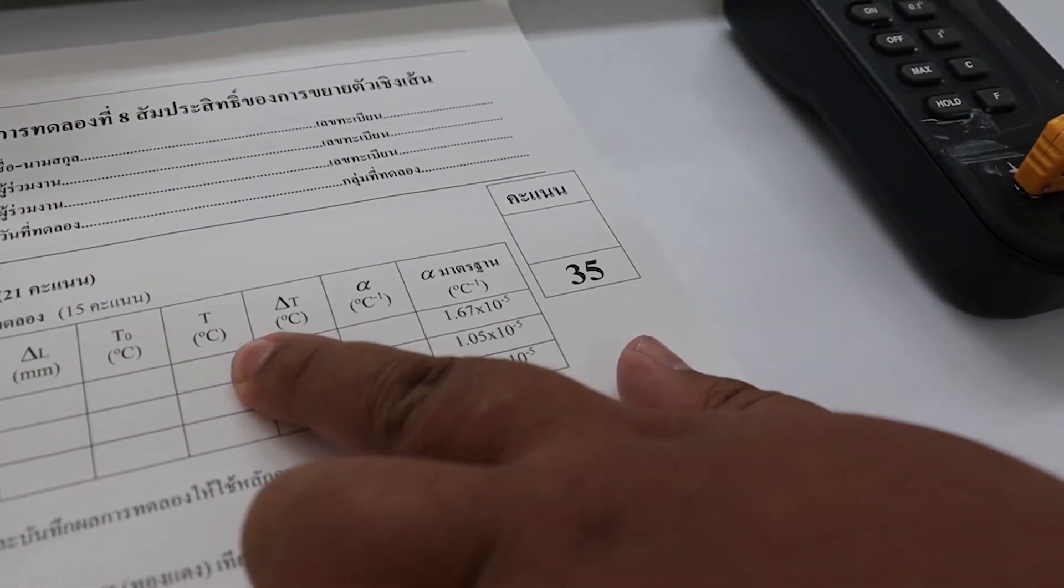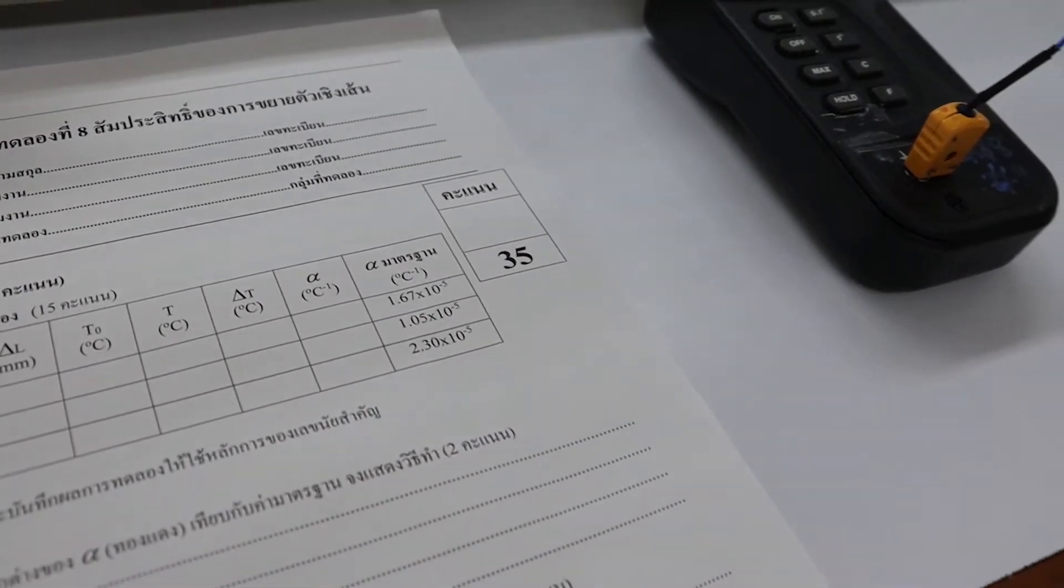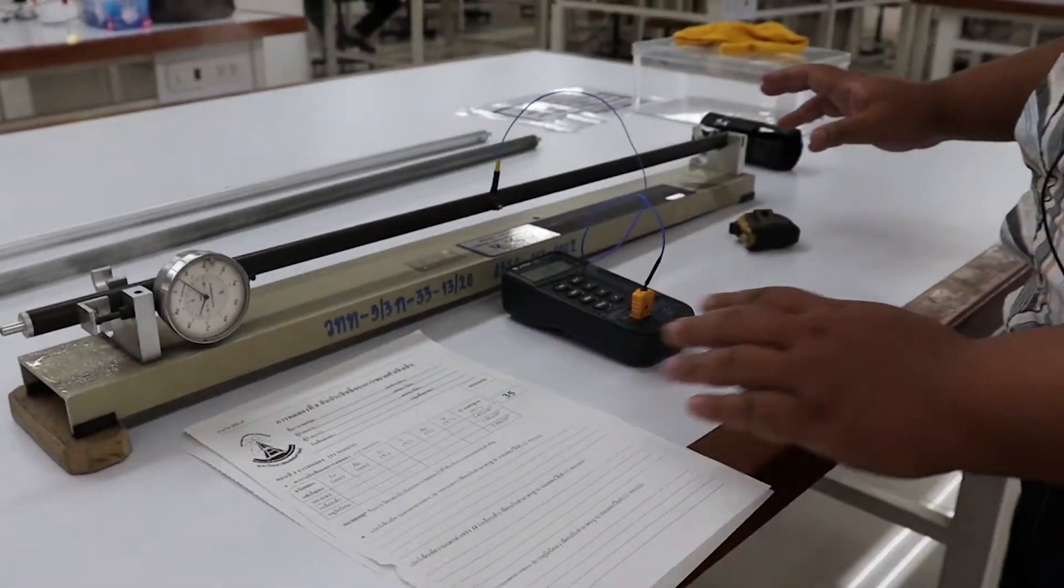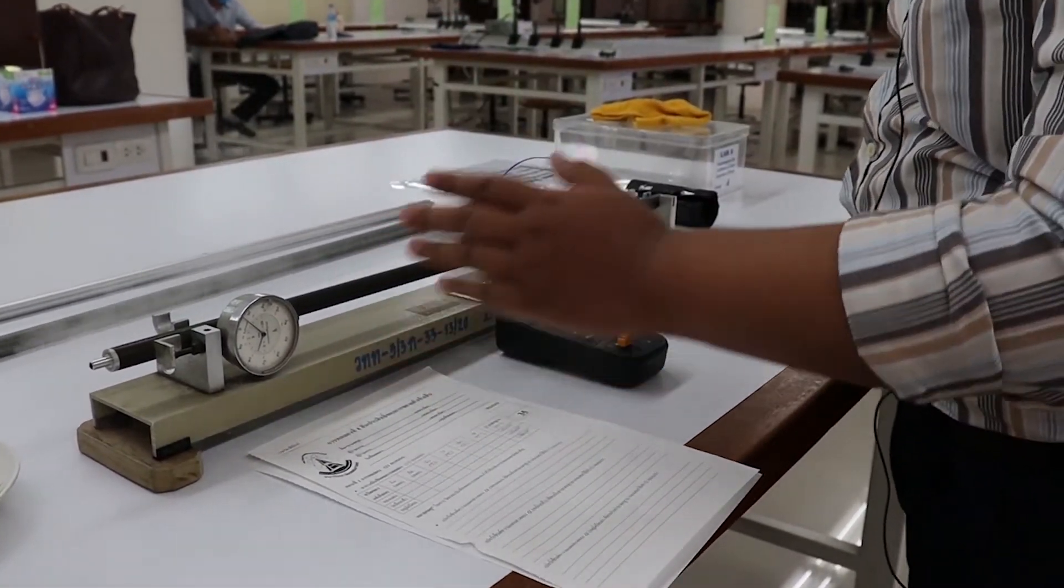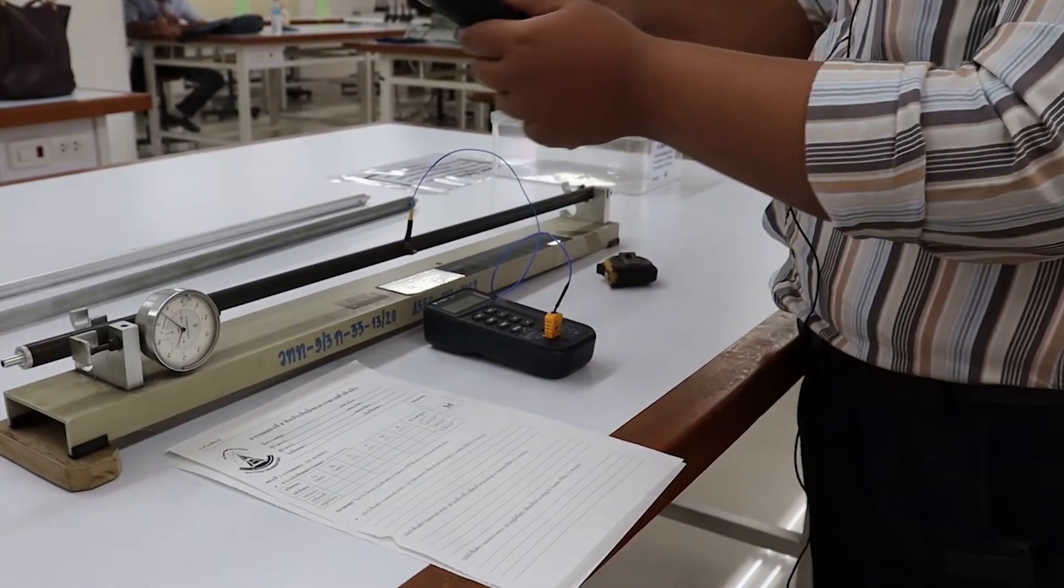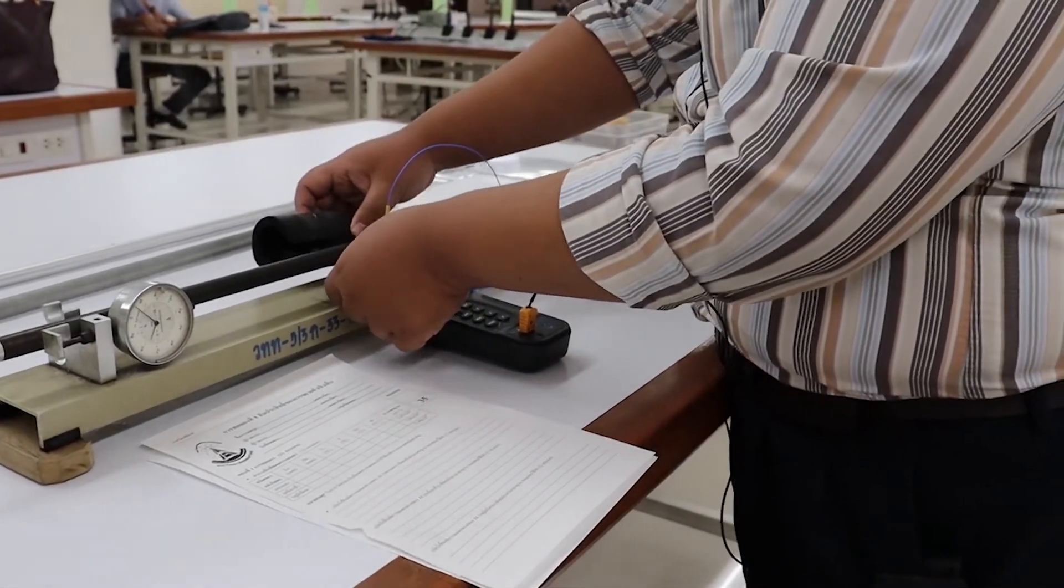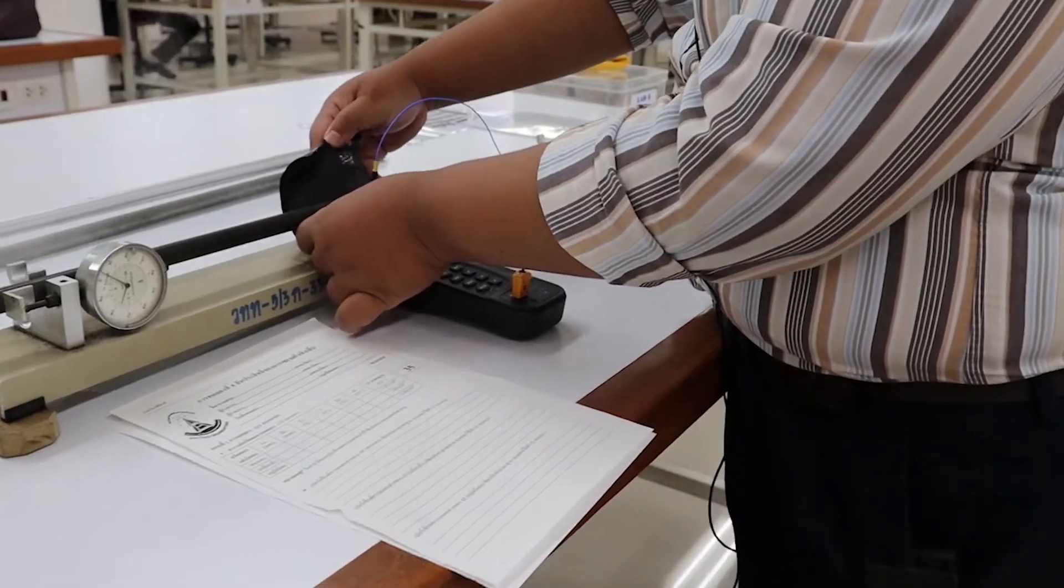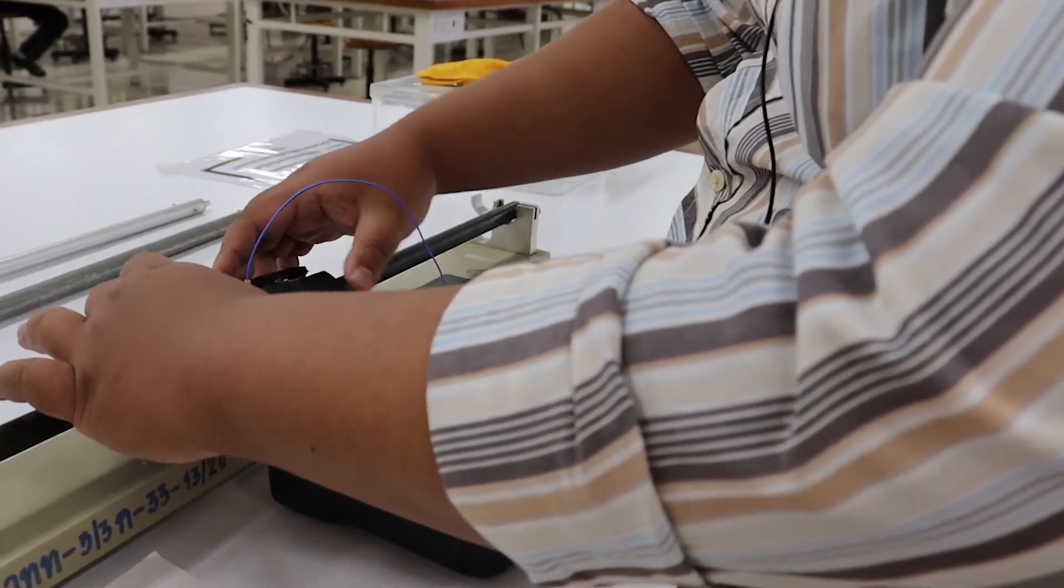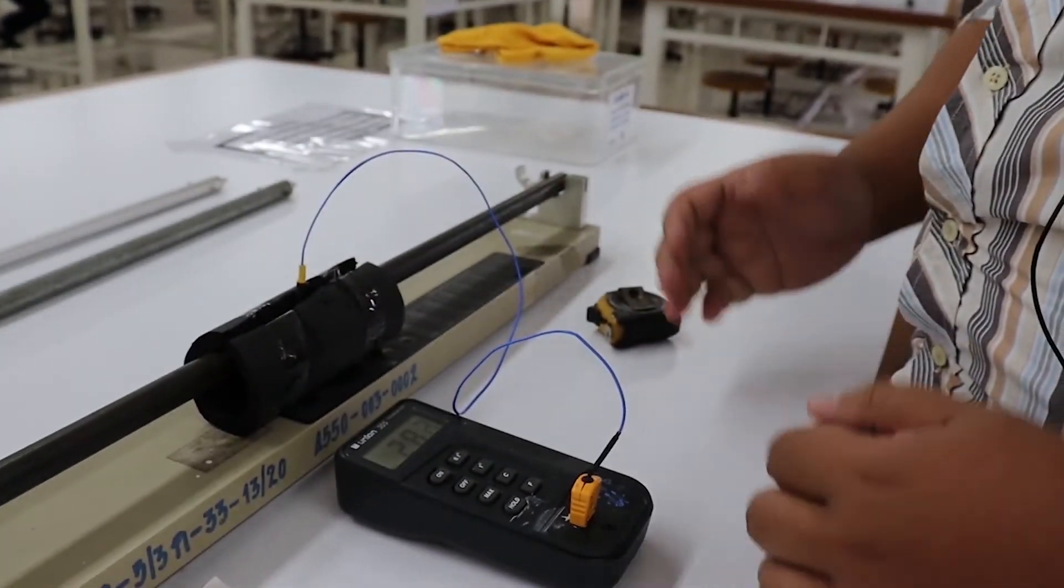Next, we have to measure the final temperature T. After that, we can calculate alpha. After setting up all of this equipment, don't forget to cover the sensor with the insulator for making the temperature stable.